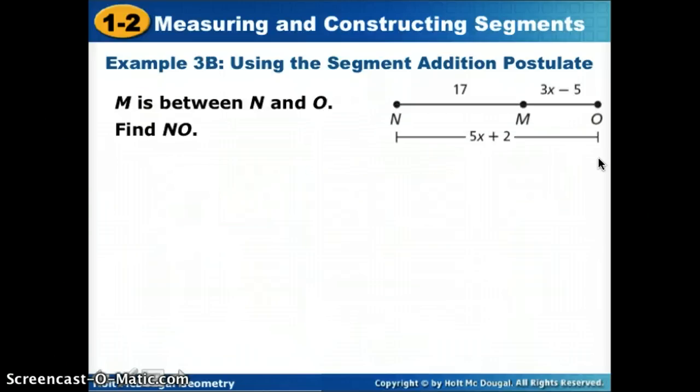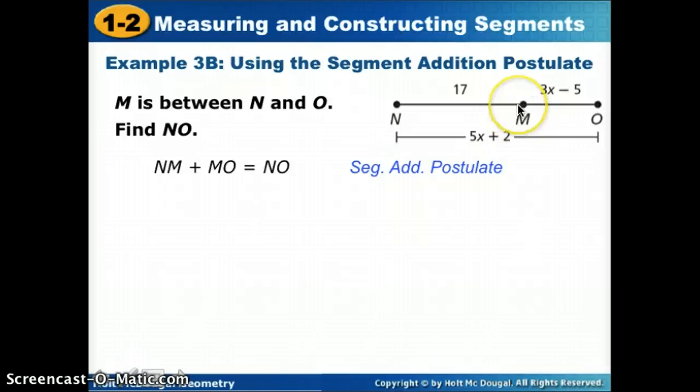Let's take it a step further. What if we use some variables? Same idea. They gave us the picture this time. M is between N and O, somewhere in the middle here, and we're looking for NO's measure. Currently, we don't know NO's measure because it has a variable. We're going to start with the same equation: part plus part equals whole. So we had one part was NM, another part was MO, and those together equal NO.